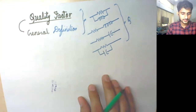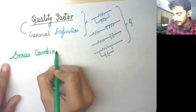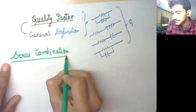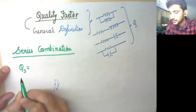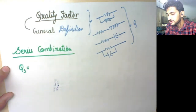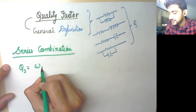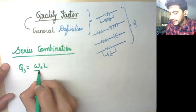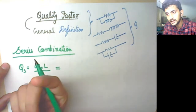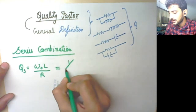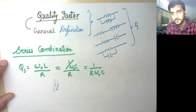As I have already told you, for series combination, if you want to represent the quality factor in terms of inductive reactance, the quality factor is written as omega naught times L upon R. That's how you write it. So for series, it is reactance upon resistance. Similarly, if you want to write in capacitive reactance, it is 1 upon R times omega naught times C.